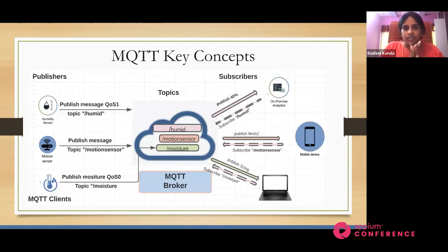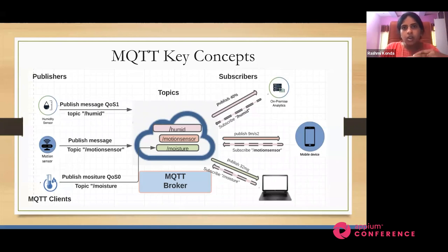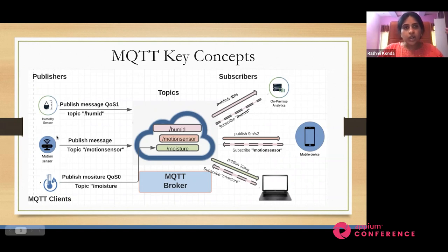Now let's get started with MQTT key concepts. MQTT is one of the main protocols used in IoT-based applications. In the Internet of Things world, everything is connected — be it your smart home, smart parking lots, temperature or thermostat sensors, your devices, connected cars, anything which emits data. They are called publishers. In this IoT world, you have a few basic concepts: publishers, topics, subscribers, and the MQTT broker.